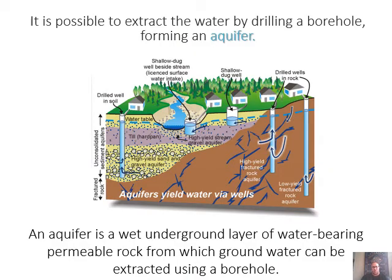It is possible to extract water by drilling a borehole, forming an aquifer. An aquifer is a wet underground layer of water-bearing permeable rock from which groundwater can be extracted using a borehole. Once you dig deep enough to hit the water table, you can pump the water up from the permeable rock, then store it and use it to water your garden, or filter it yourself for drinking and showering.